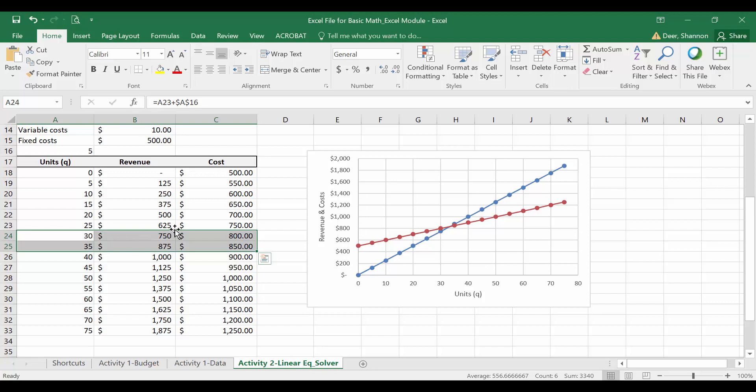We can also see breakeven in the graph. Take a second to find breakeven in the graph. You should be pointing to where the revenue and cost lines intersect, right here. Right there at the number of units at that intersection, revenue and cost are equal. Again, it's somewhere between 30 and 35 units is where that intersection lies. So that's consistent with the 33.33 units.